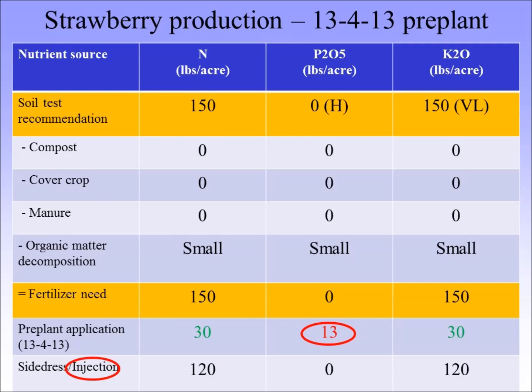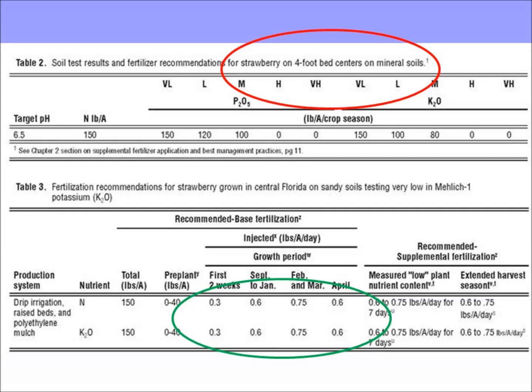Now the last step — we're almost there. We wanted to put 150 pounds of N total. We put 30 pounds pre-plant, so now we need to inject 120. Same thing for K — we need to inject 120 of N, P2O5, and K2O. The recommendation table for strawberry gives you the daily rate. In February and March, you want to apply 0.75 pounds of N per acre per day.